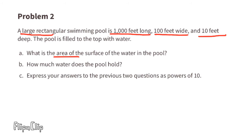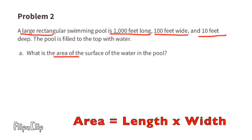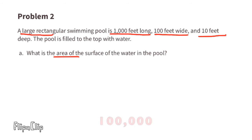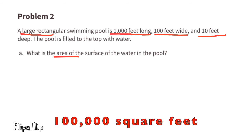Part A: What is the area of the surface of the water in the pool? To find the area of a rectangle, you need to multiply the length times the width. So we'd have to multiply 1,000 feet times 100 feet. 1,000 times 100 is 100,000, so the area would be two-dimensional: 100,000 square feet.